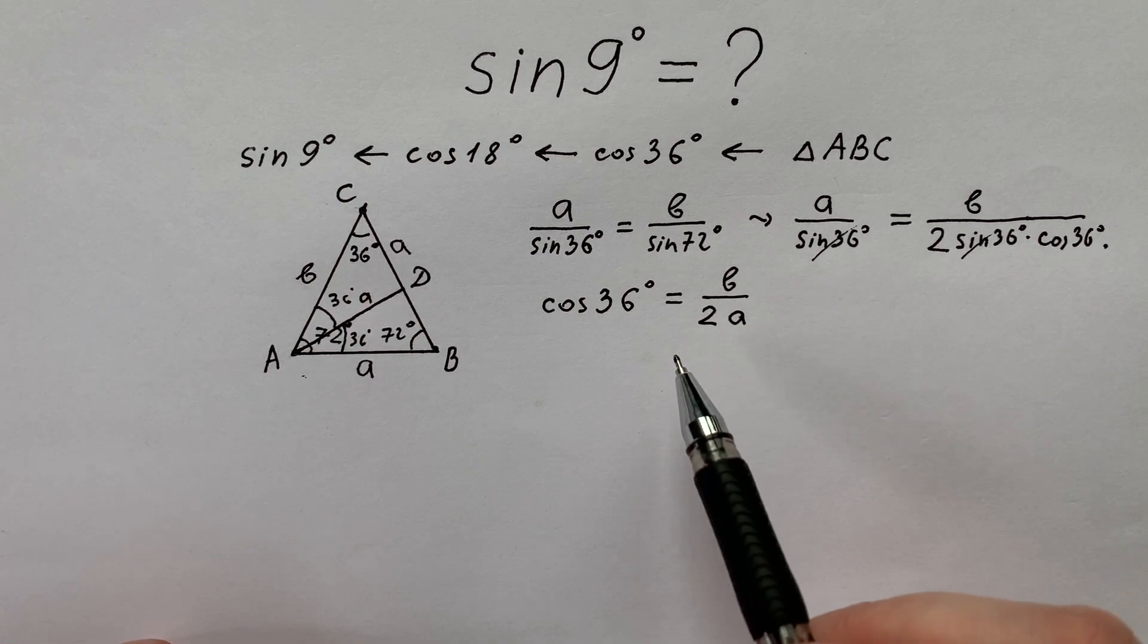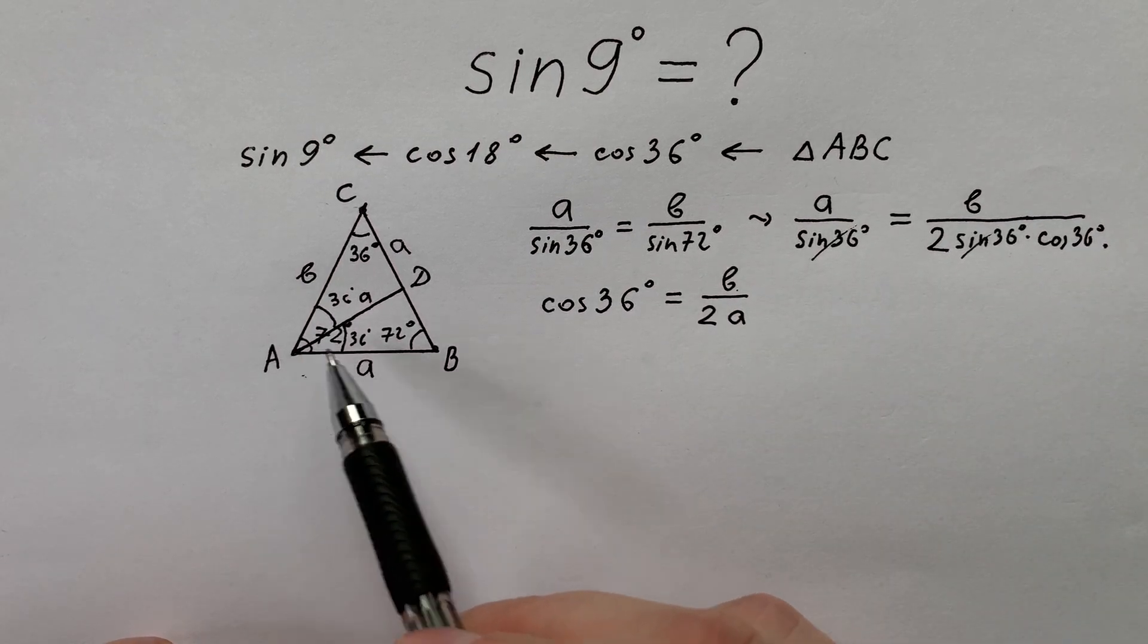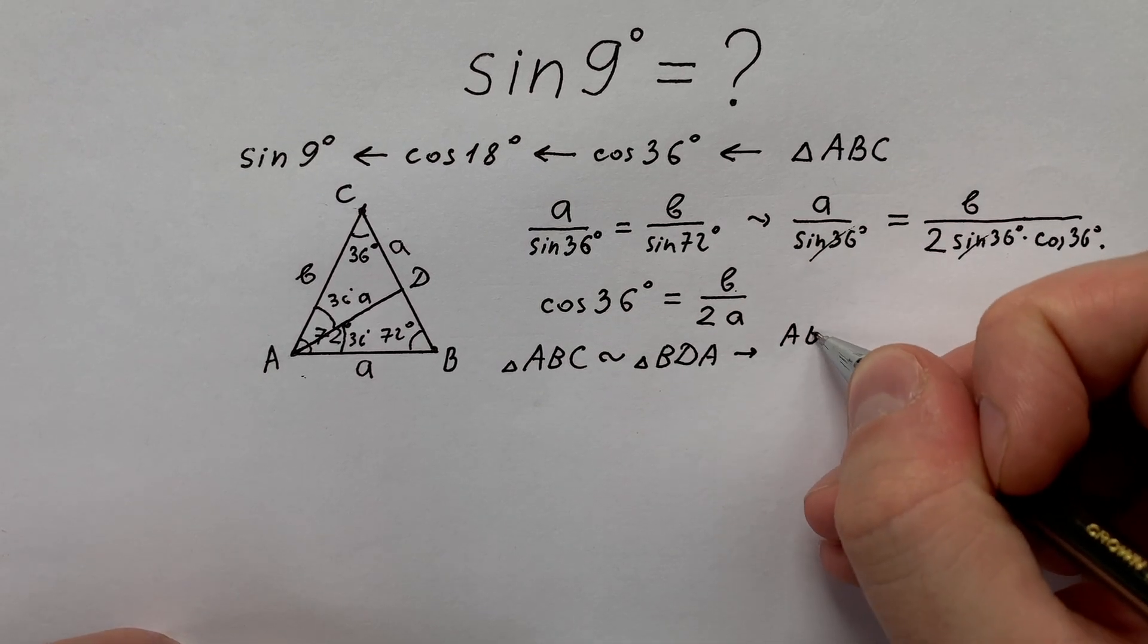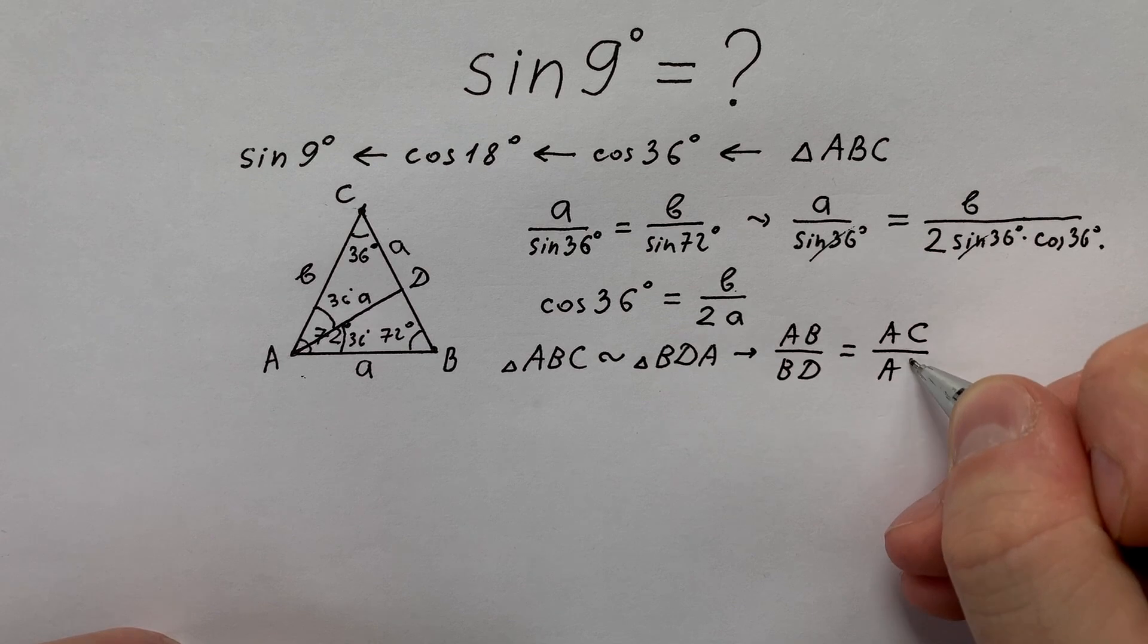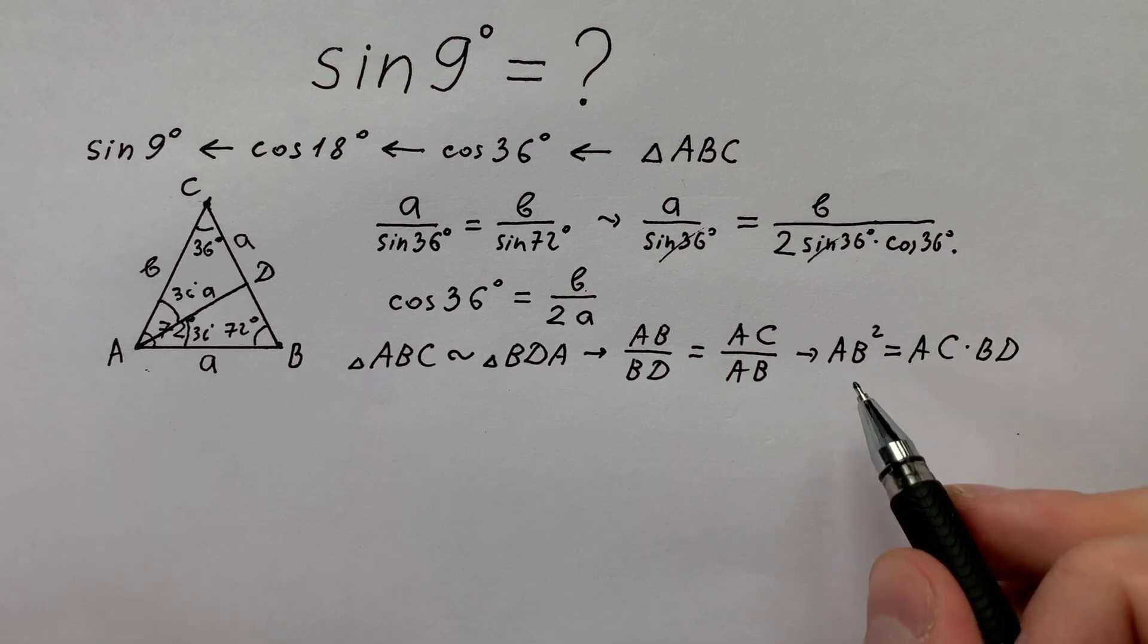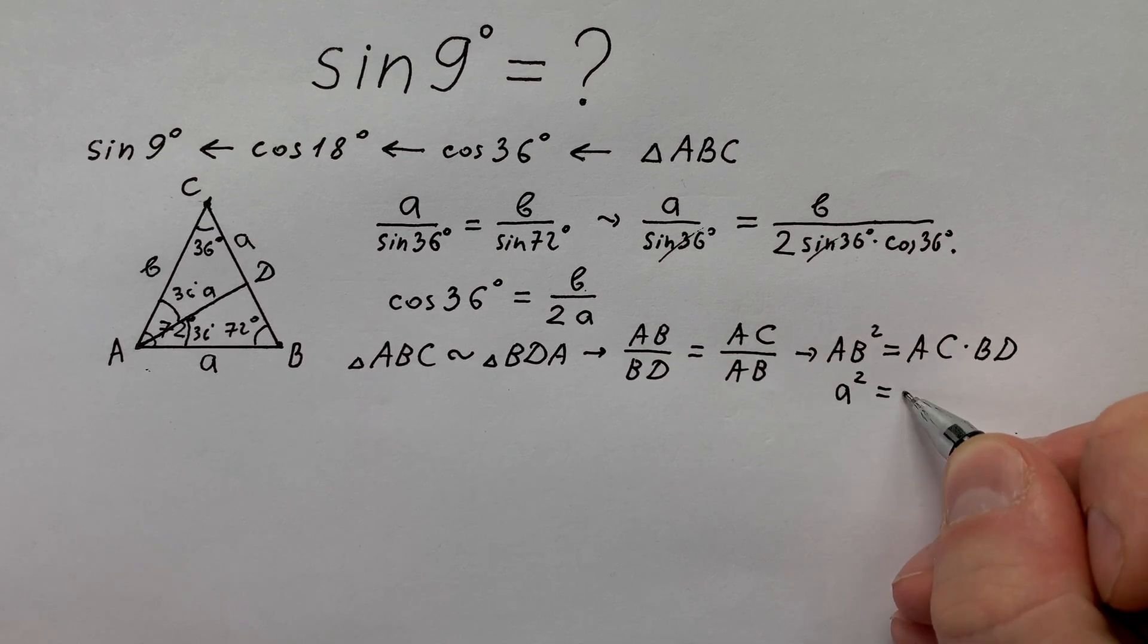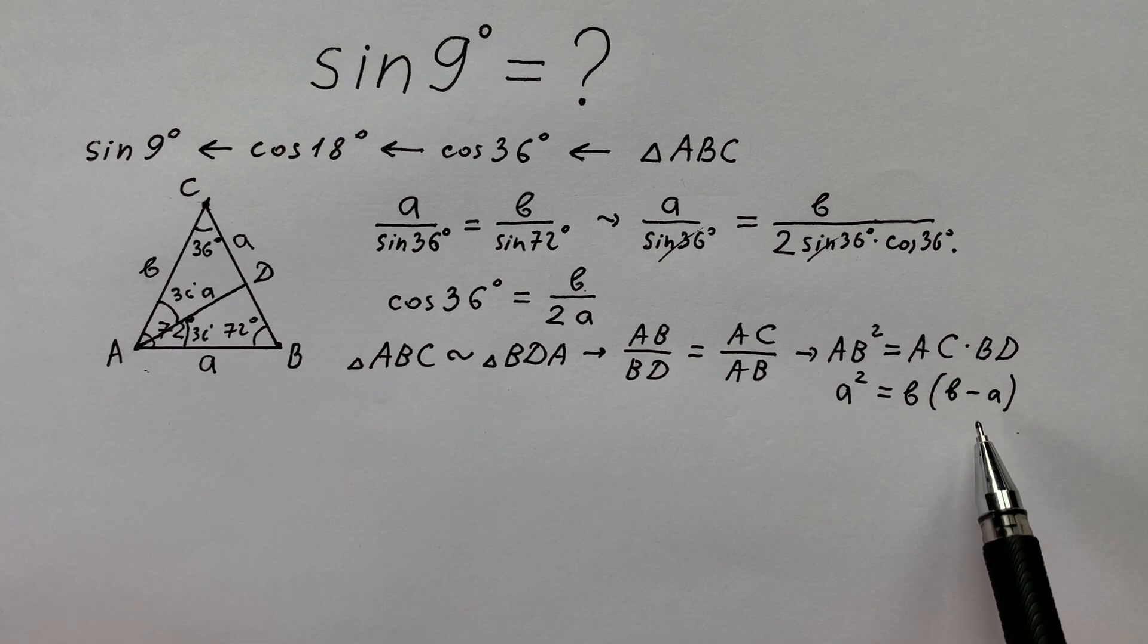But in order to find a link between b and a let's consider similar triangles. We see that triangle ABC is similar to triangle BDA. And as they are similar we can write a proportion that AB divided by BD equals to AC divided by AB, or AB squared equals to AC times BD. Remembering that AB equals a, AC equals b, and BD equals b minus a, we can write that a squared equals to b times b minus a. And dividing both sides of this equation by b squared.